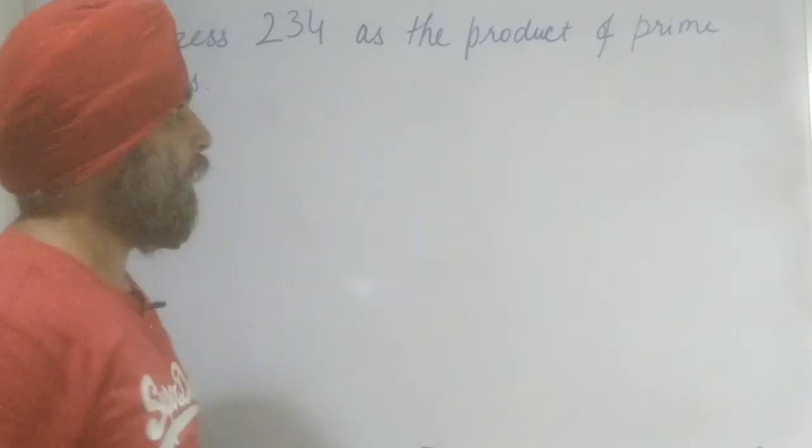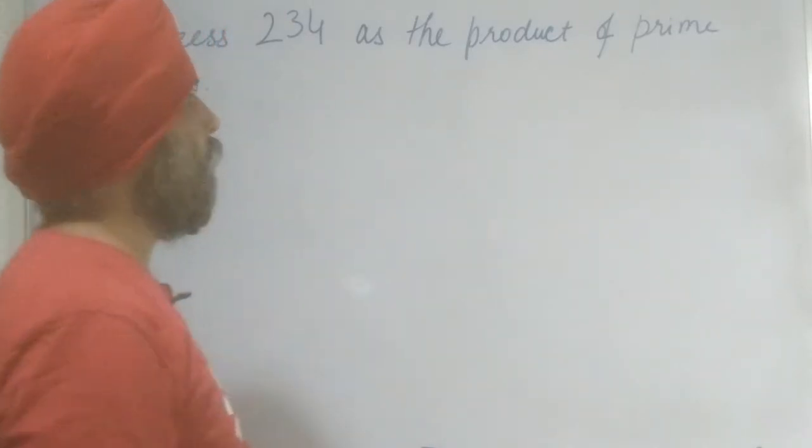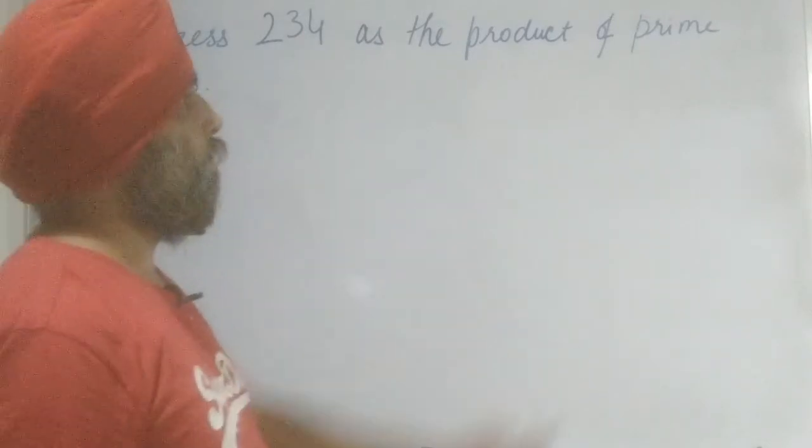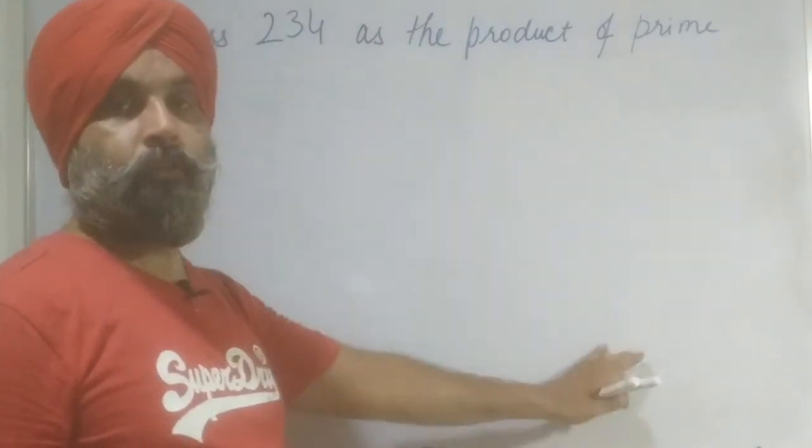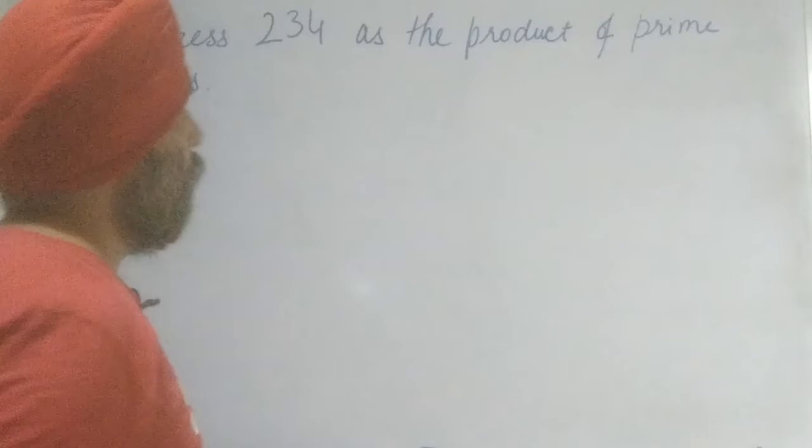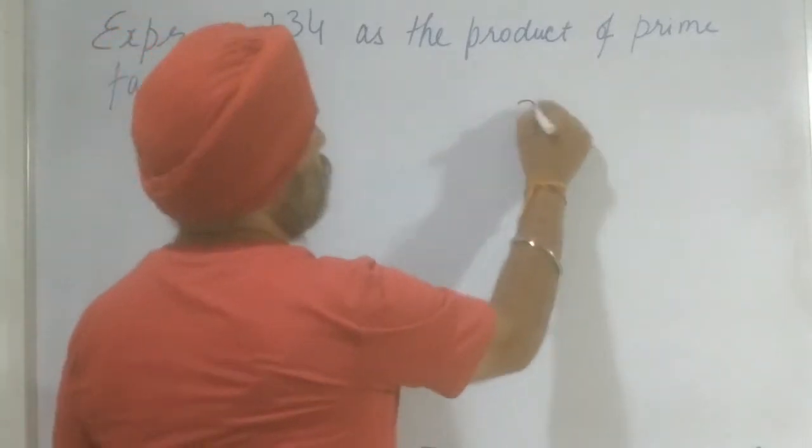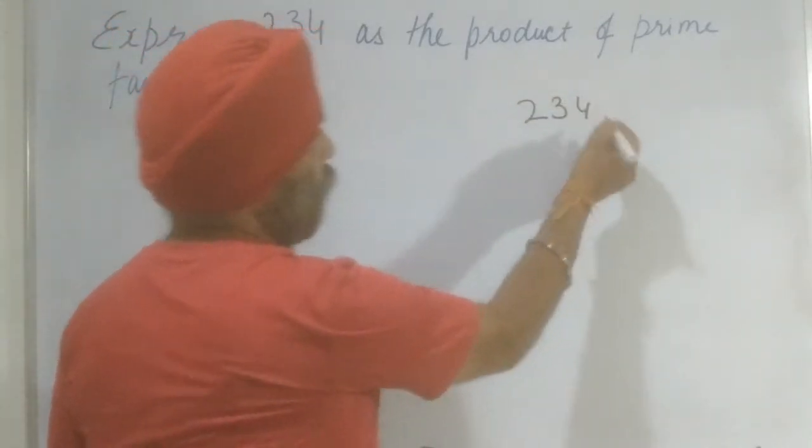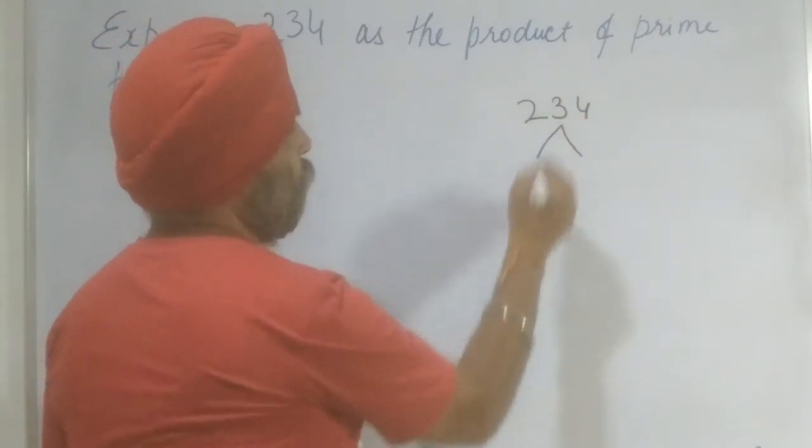For this there are two steps only. The first is having the factor tree. We are going to find the prime factors of any number then express it. So let's begin. We should not waste our time. On the right side we are going to form the factor tree.